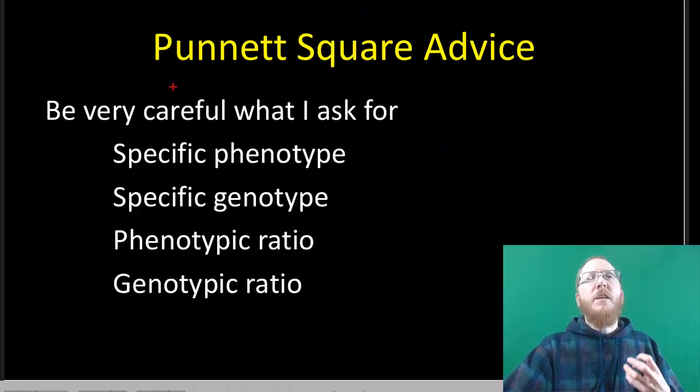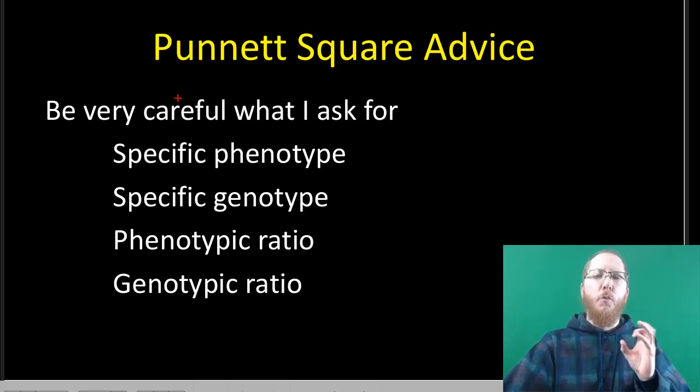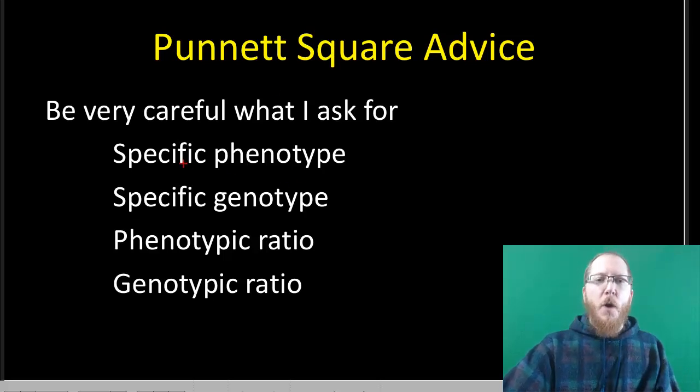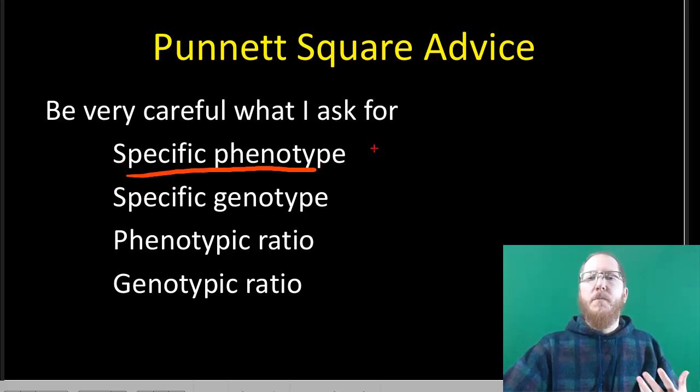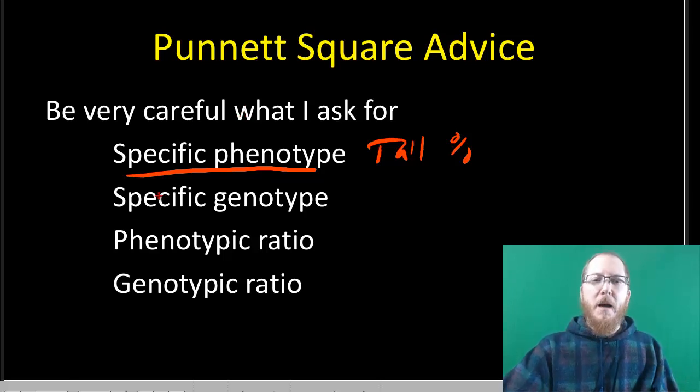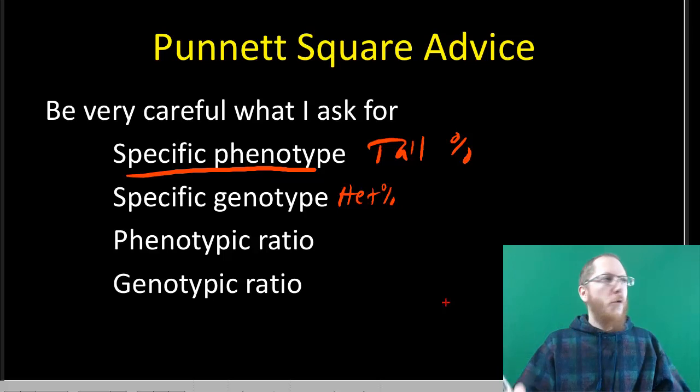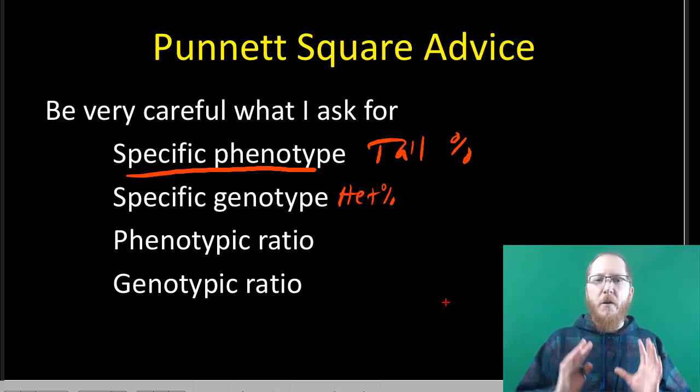Just to make sure we're clear, when I give you these Punnett square problems, I'm going to ask you usually for one of four things, but you have to pay attention to which one I'm asking for. I might ask you for a specific phenotype like saying what's the probability they'll be tall, and I'm expecting you to give me essentially like a percent or a fraction of how many are tall. I might ask you about specific genotype where I could say like give me a percent for how many are heterozygous. I don't care about the homozygotes here. Just tell me two out of four or 50% or whatever it is are heterozygous.